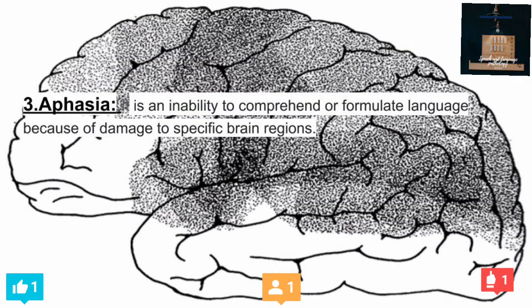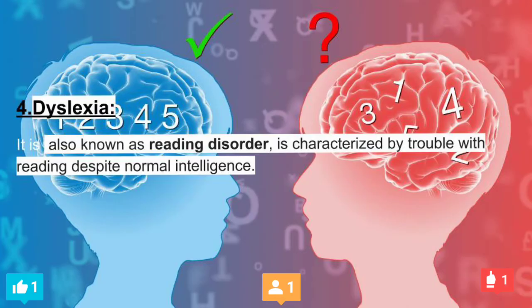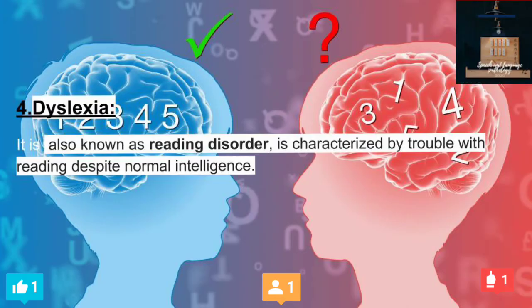Number three is aphasia. It is an inability to comprehend or formulate language because of damage to specific brain regions. Number four is dyslexia, also known as reading disorder, characterized by trouble with reading despite normal intelligence.